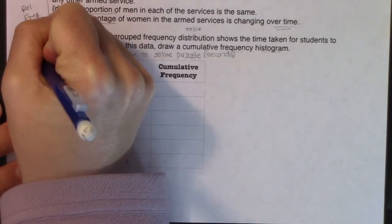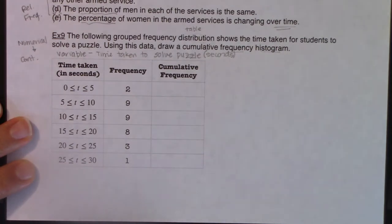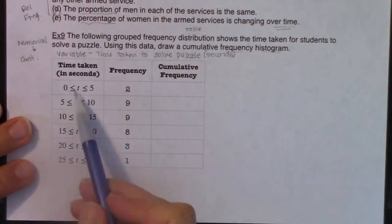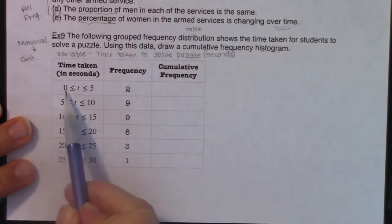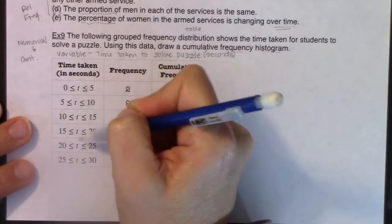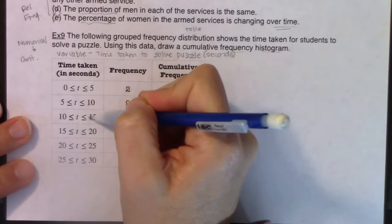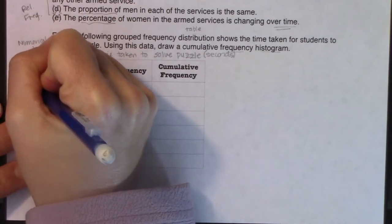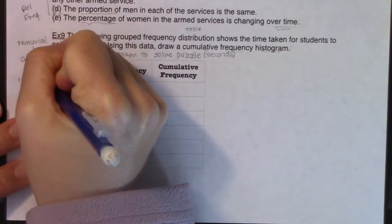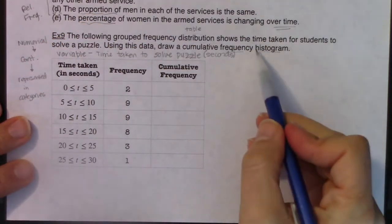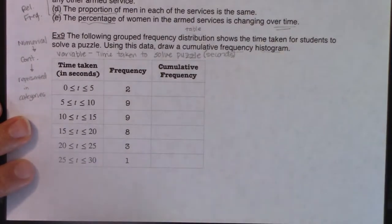This is a numerical variable. It would be a continuous numerical variable because we always measure time. And if I look at the way it's presented to me, they've actually grouped it. They're saying time is somewhere between zero and five seconds, five and 10, 10 and 15. So what they've actually done here is represented those times in groups, or in categories.